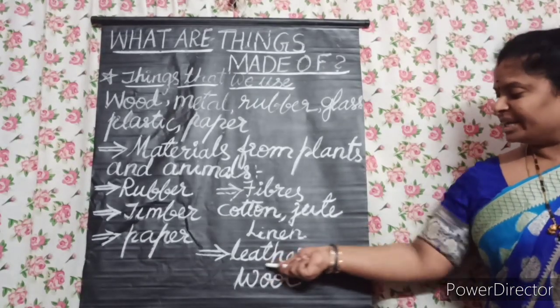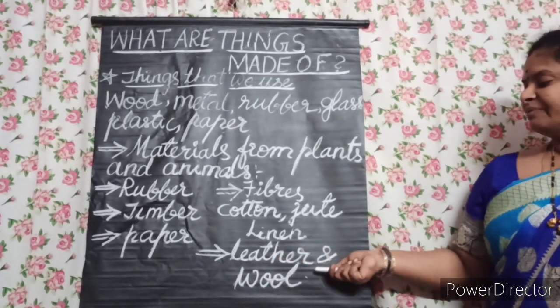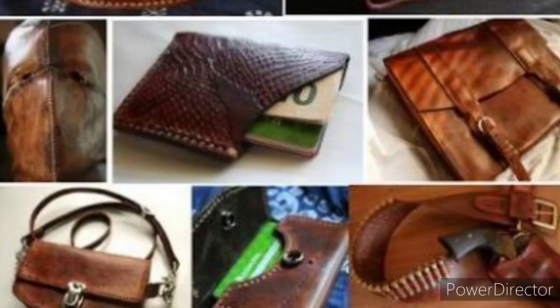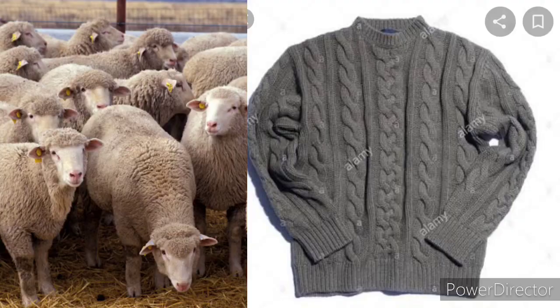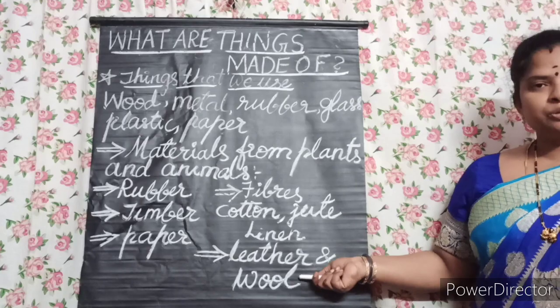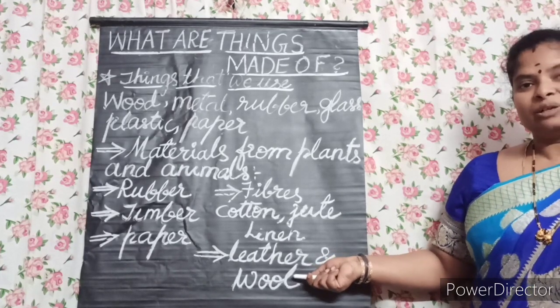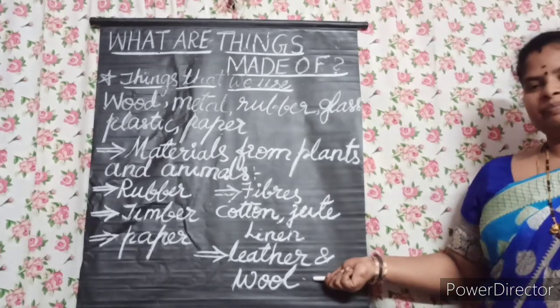These are the materials we get from animals: leather and wool. Leather and wool are used to make shoes, bags, clothes, and more.